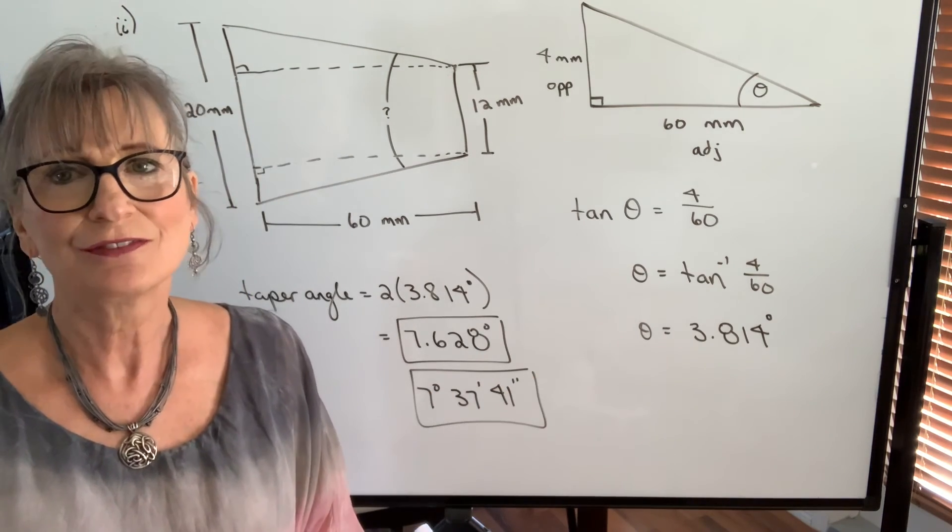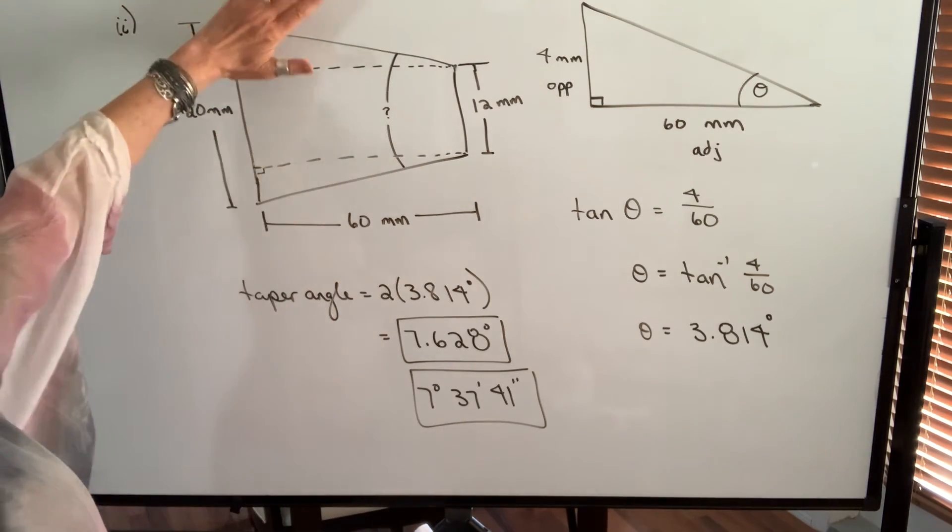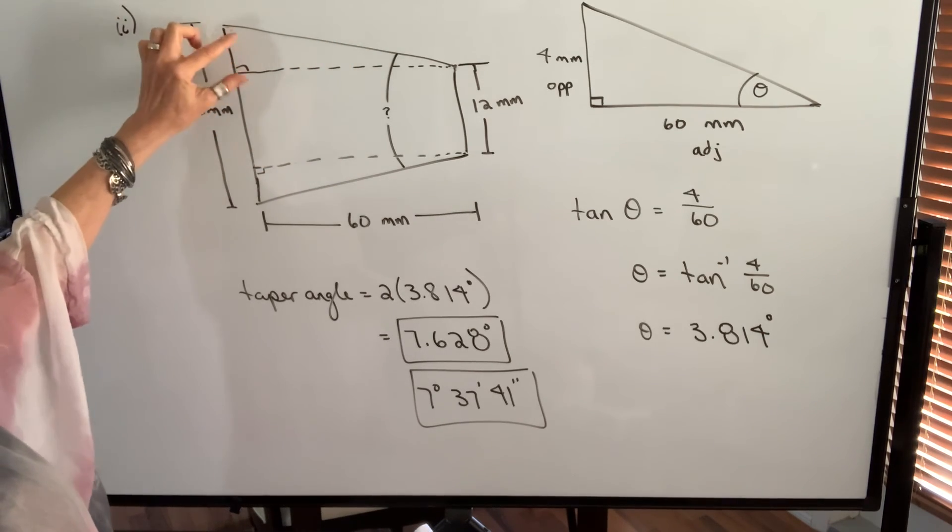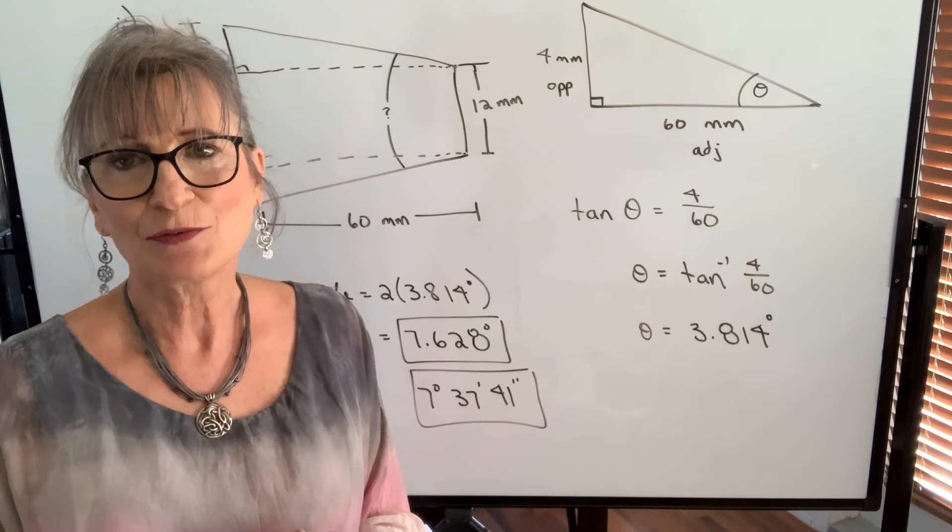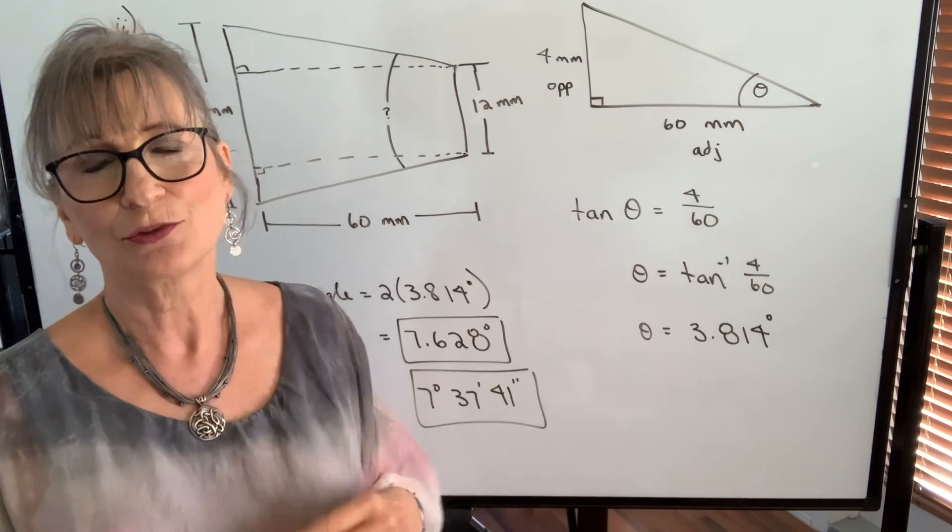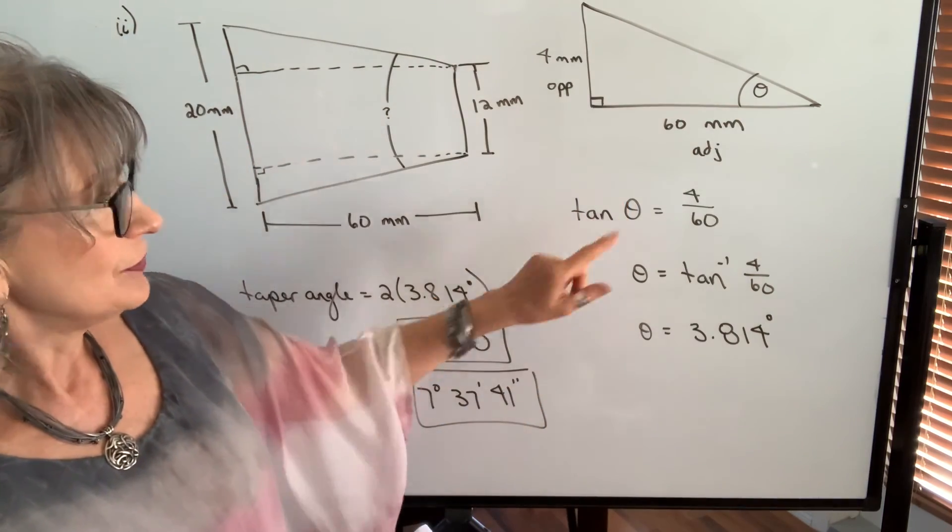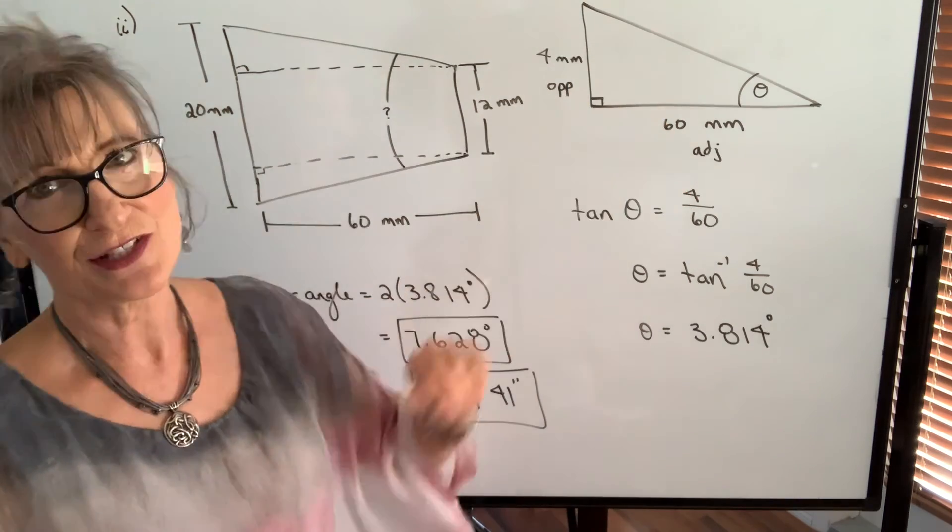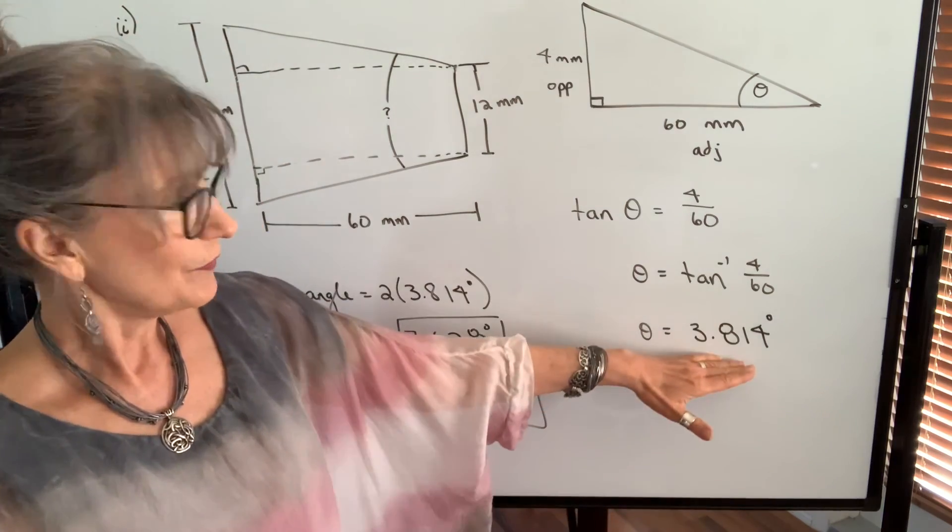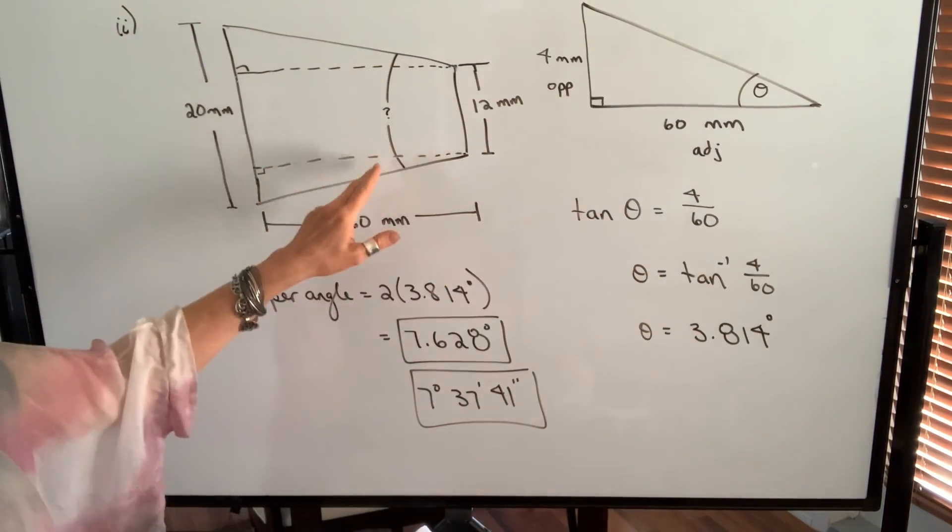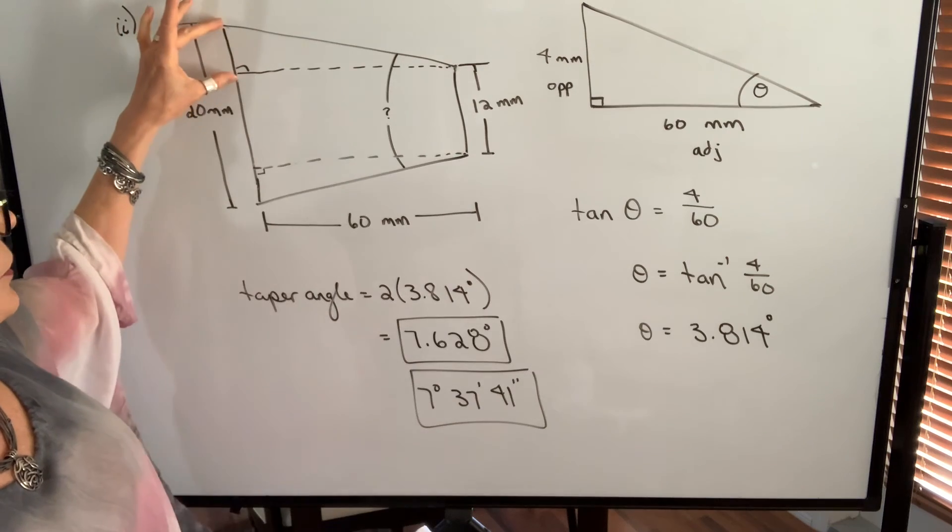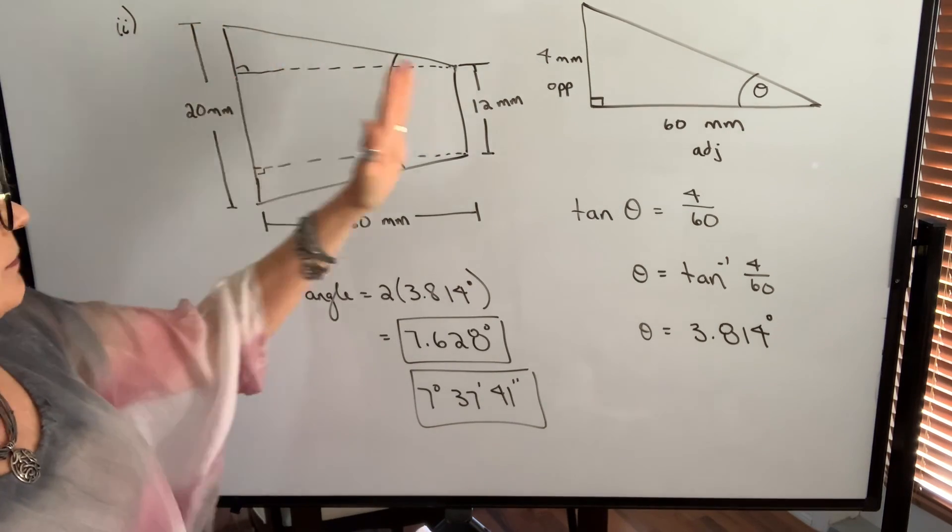So in doing any of these taper angle calculations you're going to want to draw the cross-sectional area which should be this isosceles trapezoid. Then take one of the right triangles either the top one or the bottom one, label the pieces of information that you know. It'll either be two sides and you're finding an angle or you know the angle and one of the sides and you're finding the other side. In either case you're going to be using the tangent function because you're going to be using the opposite and the adjacent side. Find the missing piece of information. Remember if it's an angle double it to get the included or the taper angle. If it's this side that you're finding remember you have to use that to determine the missing diameter.